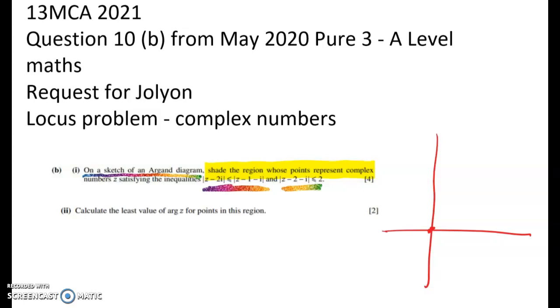The second thing we've got to do here is find the least value of arg z for points in this region. So what does it mean to find a value of arg z? Well, going all the way back to basics, if that's my complex number z here, then the argument of z is the angle formed by the positive direction of the x-axis and the line from the origin going out to that number. So that's what we're going to be working with, and this is the trickier bit of the problem, the second part, as usual.